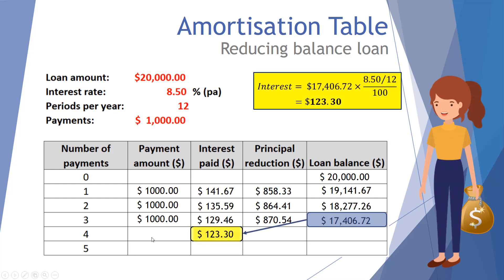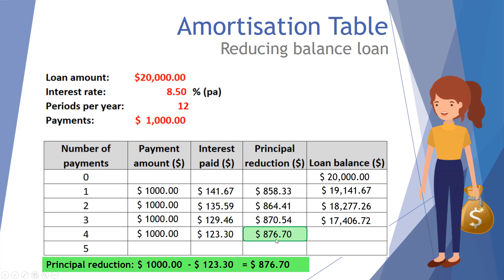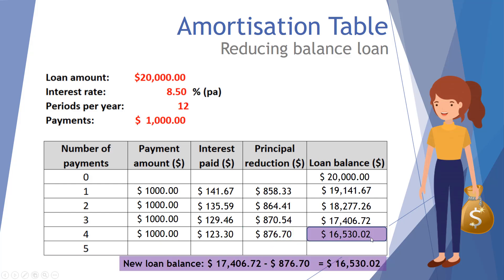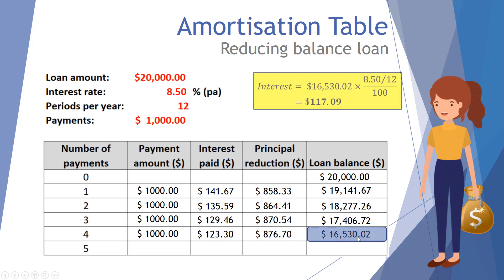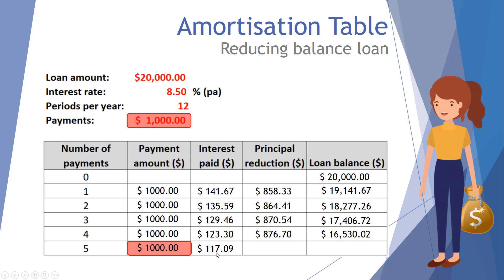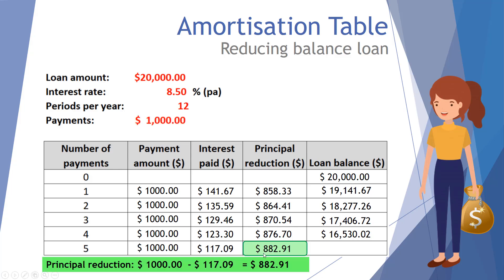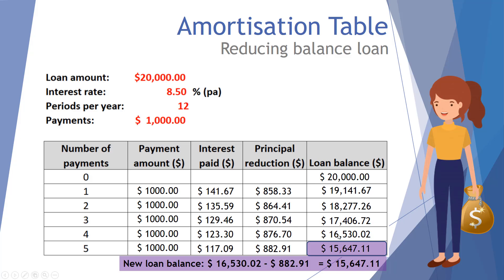We repeat: calculate interest on the balance, she makes a payment, subtract to get the principal reduction, then subtract from the loan balance. At the end of payment four the balance is sixteen thousand five hundred and thirty dollars and two cents. For the fifth and final payment we apply the interest calculation — the interest is dropping every time because it's a percentage of a declining balance. This time only one hundred and seventeen dollars and nine cents goes to interest, and eight hundred and eighty two dollars and ninety one cents reduces the balance to fifteen thousand six hundred and forty seven dollars and eleven cents.